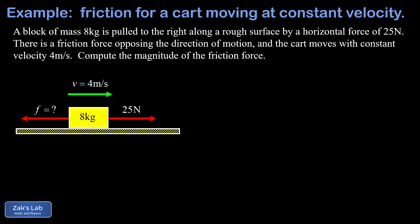So we're told in the problem that an 8 kilogram block is pulled to the right along a rough surface by a horizontal force of 25 newtons. There's an unknown friction force opposing the direction of motion and the velocity is a constant 4 meters per second.